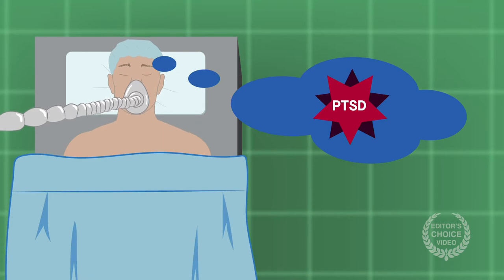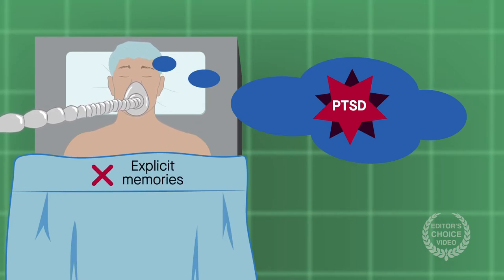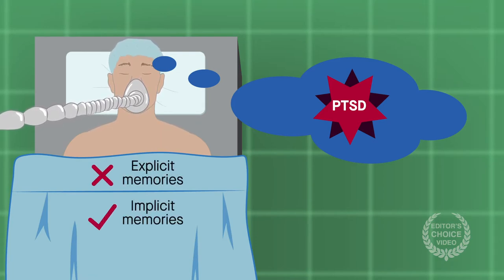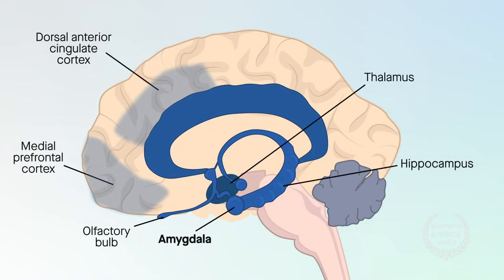Anesthesia usually ensures patients lack explicit memory, but implicit memories can still form. Previous studies have suggested that implicit memory formation can occur under sedation via circuits in the amygdala.